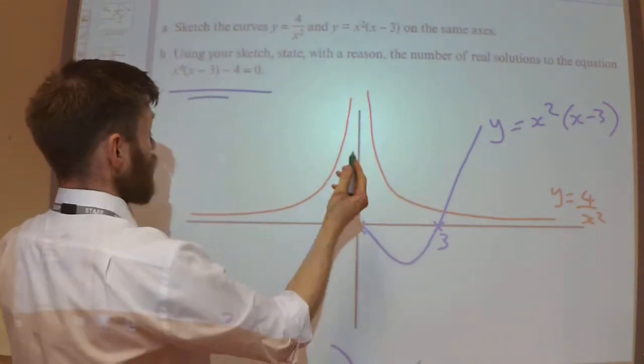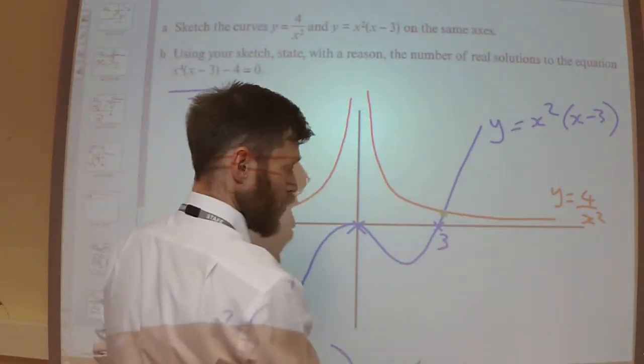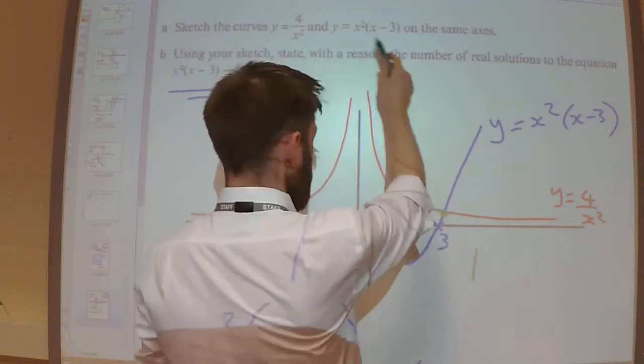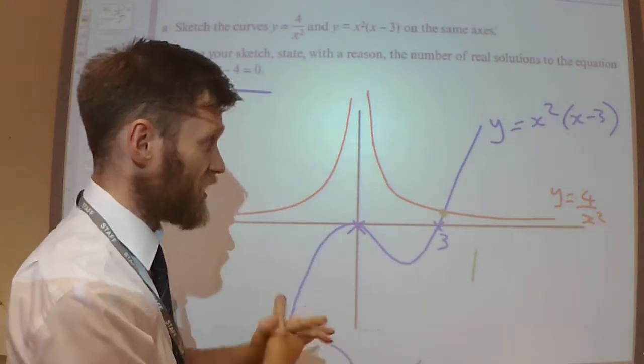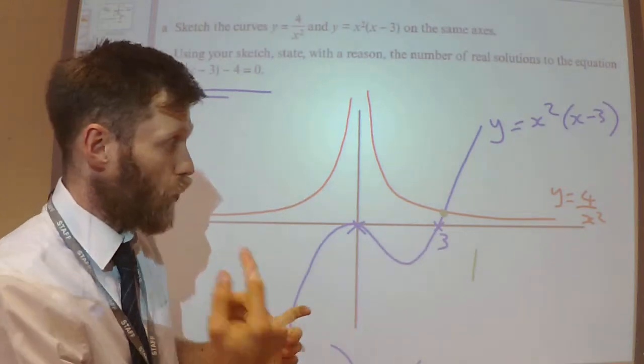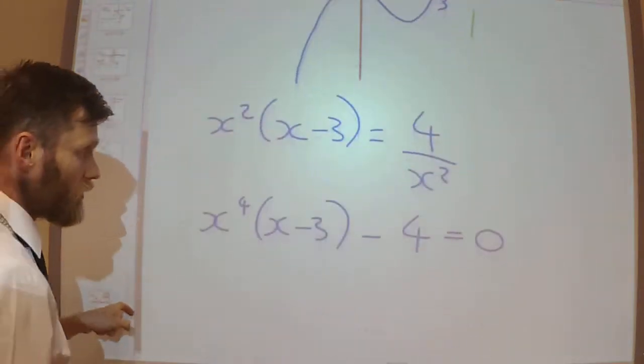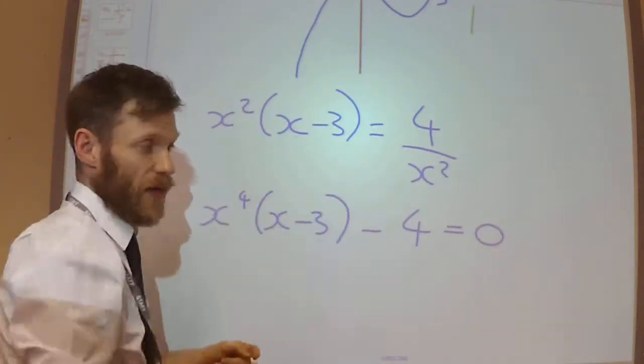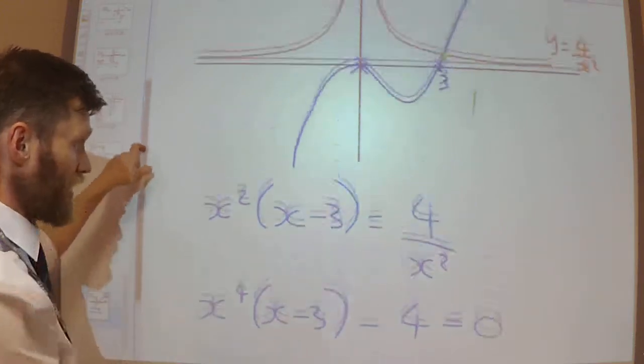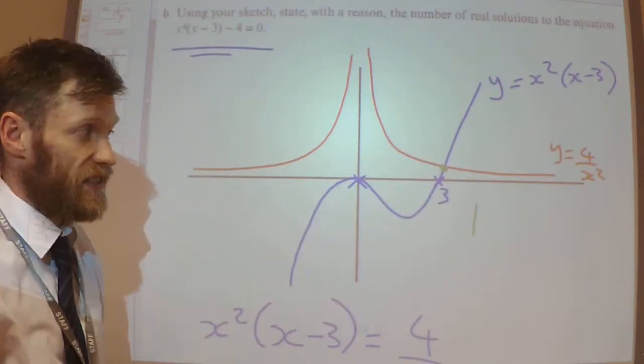So in terms of how many solutions, there is one. And the reason, the reason I write down, is because the graphs intersect at one point. And then I would show my working out with the equations to prove that this equation refers to where the lines intersect.